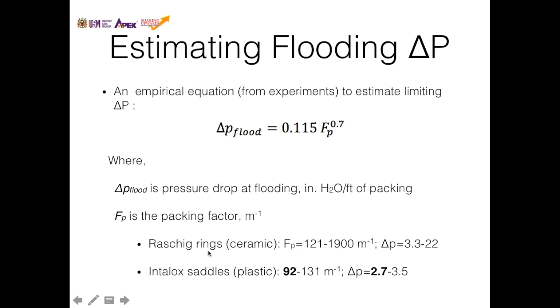Some examples of packing factors are Raschig rings, in this case a ceramic type, has a packing factor of 121 to 1,900, which goes from 3.3 inch of water to 22 inch of water. That means you would decrease the pressure drop if you were to increase the Raschig ring. But it has a lower pressure drop of 2.7 to 3.5. If you were to compare these two, Intalox saddles would have a higher chance of flooding compared to Raschig rings.